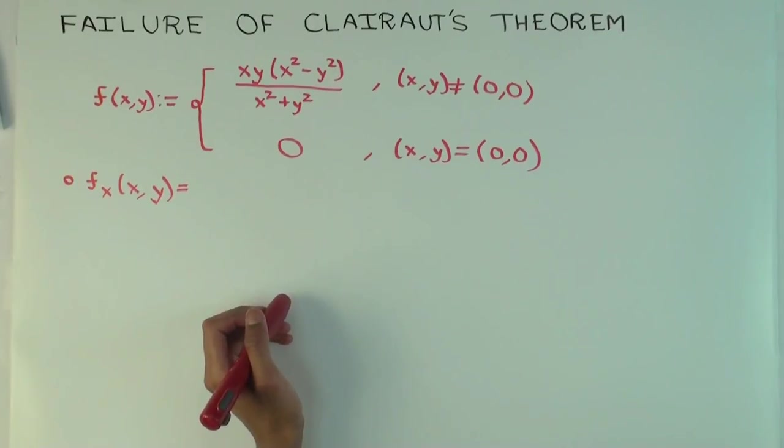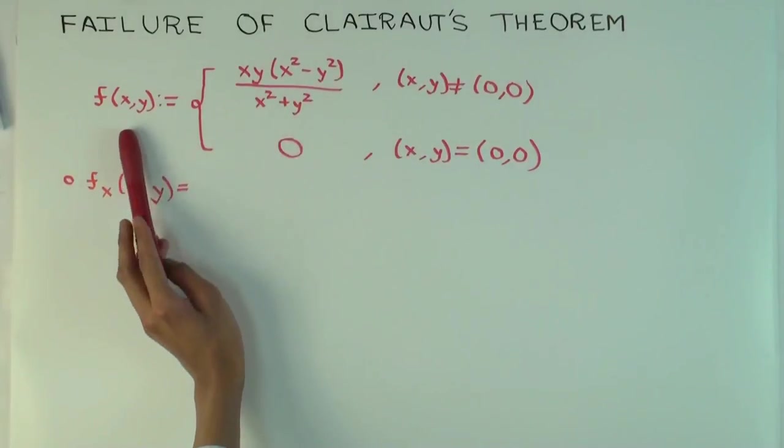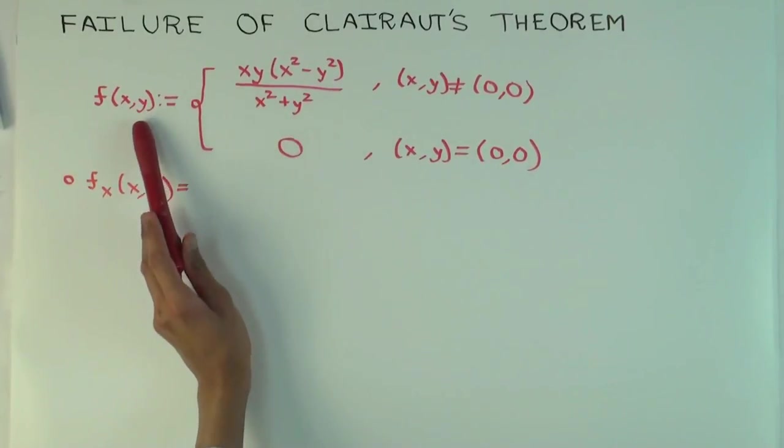Okay, so in this talk, I'm going to give a sort of counter-example to Clairaut's theorem. Now, obviously, the theorem isn't false, otherwise it wouldn't be called a theorem. But this is a situation where some of the conditions don't hold.